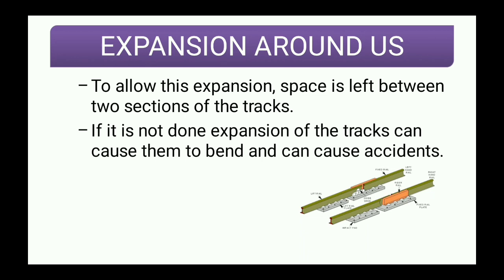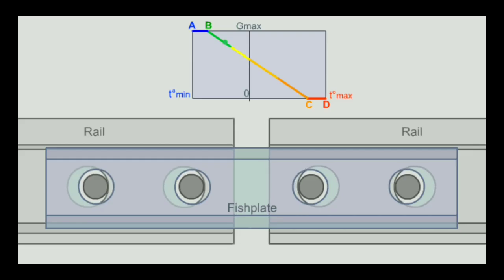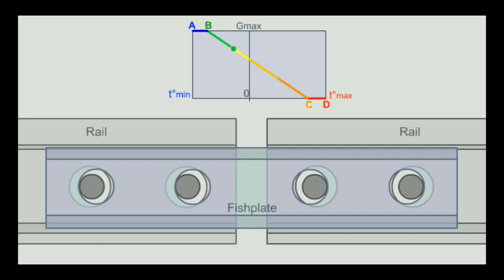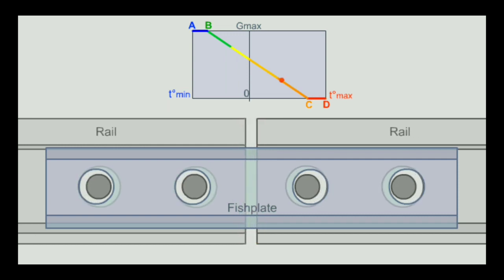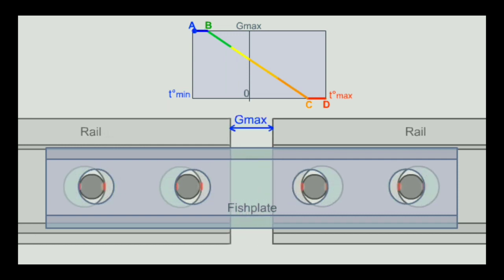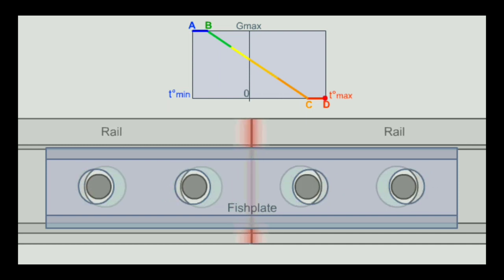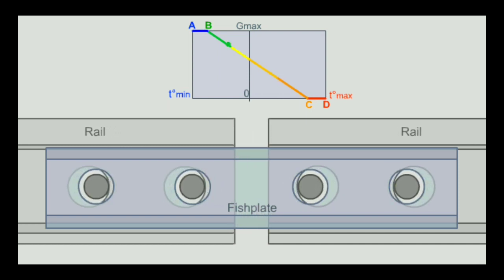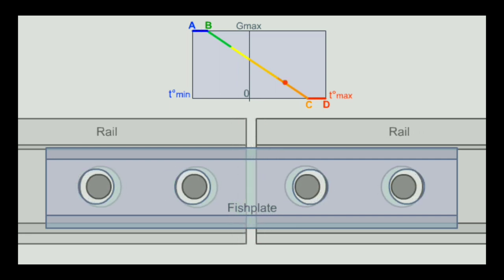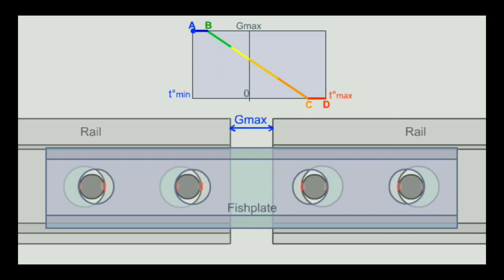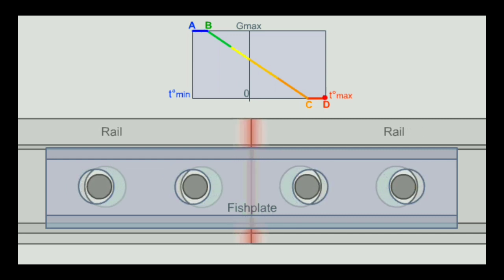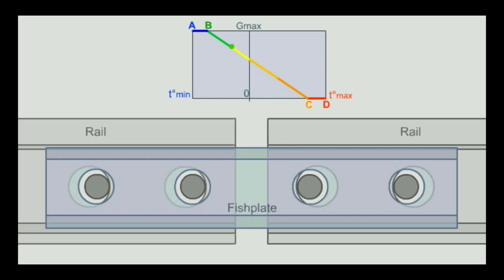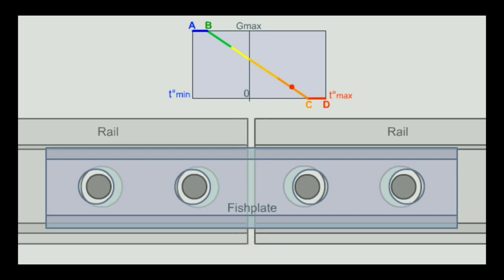Now let us see the animation of expansion between the railway tracks. In this way, heat causes expansion of the railway tracks. In summers, especially when the temperature is very high, due to heat the two sections of the track expand. And if the gap is not kept between them, it loosens the joints of the tracks. So it is necessary to keep a gap between the railway tracks.